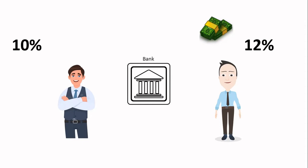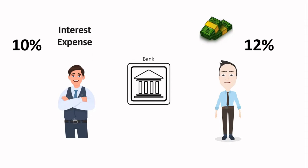The interest amount that the bank is paying to David is called interest expense, and the interest amount the bank is generating from Beckham is called interest income.